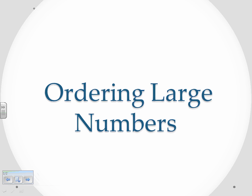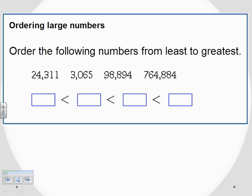Ordering large numbers is the problem set that we're working on now — putting large numbers in order. We've been given four numbers and we're asked to put them in order from smallest to largest. So the one on the left hand side is less than its neighbor on the right, which is less than the next number. The smallest one is all the way over on the left.